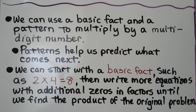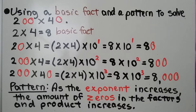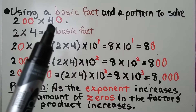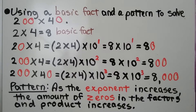We can use a basic fact and a pattern to multiply by a multi-digit number. Patterns help us predict what comes next. We can start with a basic fact, such as 2 times 4 is equal to 8, then write more equations with additional zeros in factors until we find the product of the original problem. Here we are solving 200 times 40, and our basic fact is 2 times 4, which equals 8.